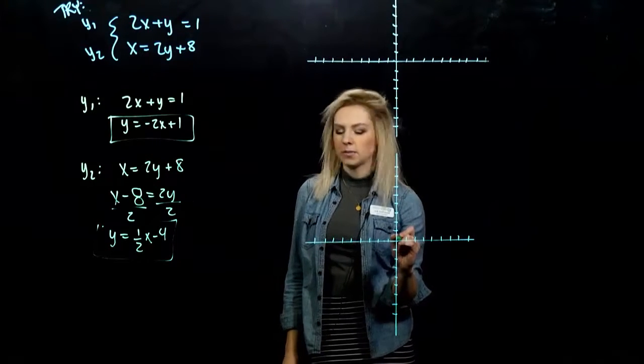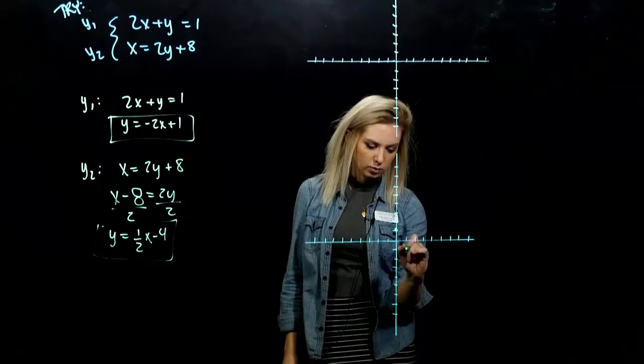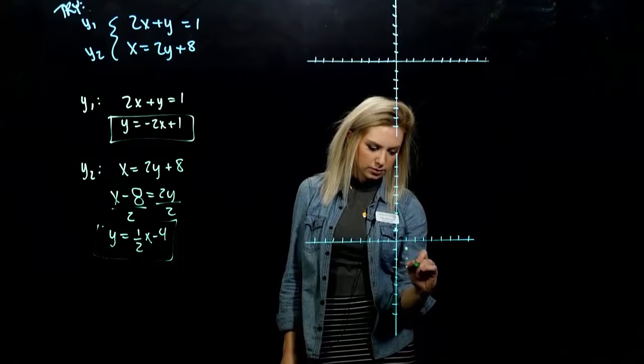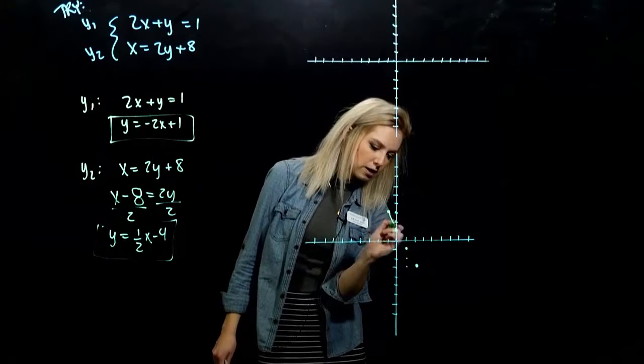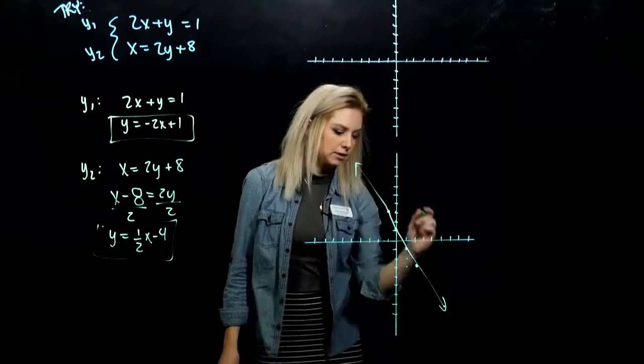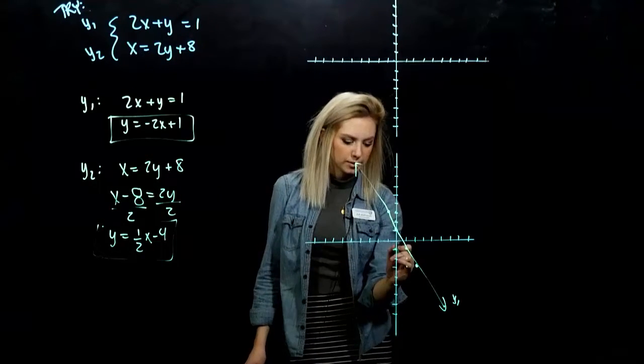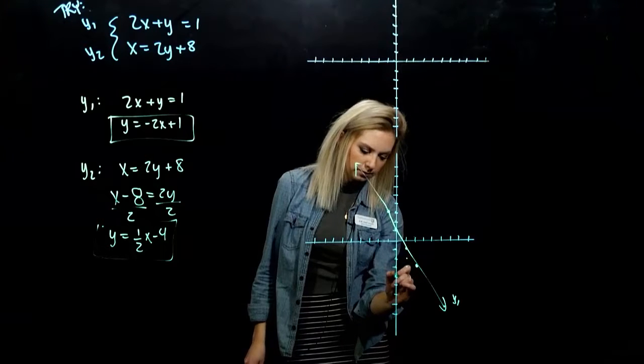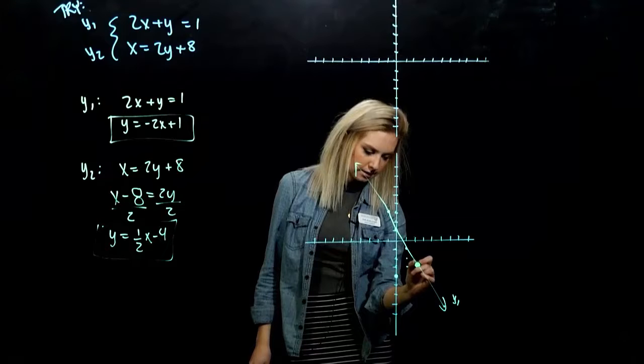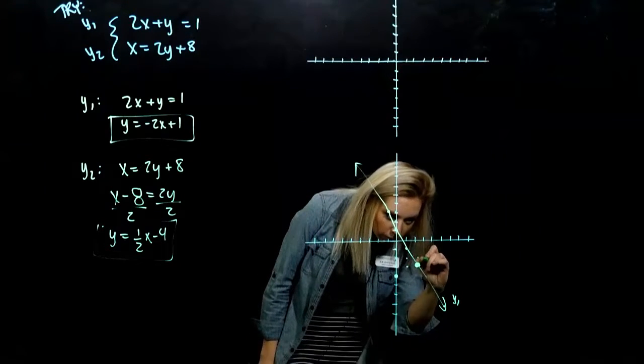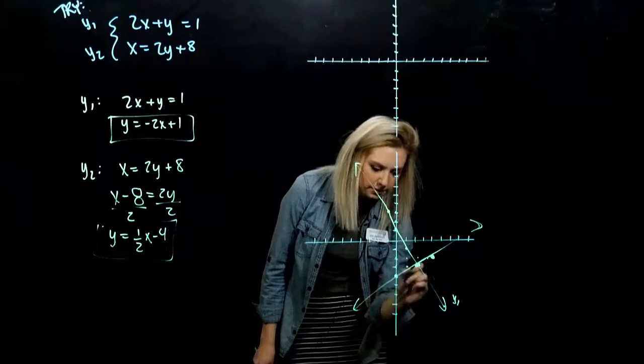So first line, we have a y-intercept at (0,1). And from there I move according to my slope: down 2 over 1, down 2 over 1, or up 2 back 1. It's always that rise over run. So this is my first line. And the second one went through the y-intercept (0,-4). From there I go up 1 over 2. Hey, that's nice. Up 1 over 2.